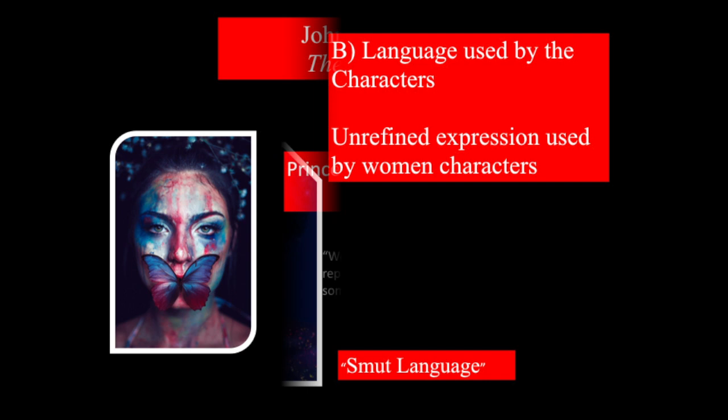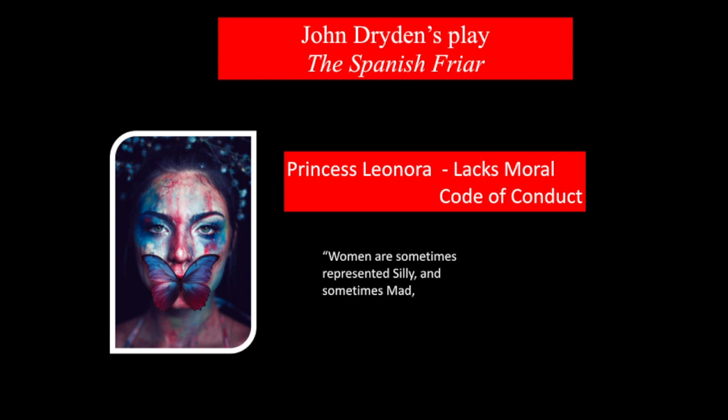Collier states one such work written by John Dryden — a poet laureate during the initial half of the Restoration period — called 'The Spanish Friar.' In this particular work, the main female protagonist, Princess Leonara, lacks a moral code of conduct. She is not able to keep her virtue intact, gets involved in wrong practices, licentious acts, and affairs. According to Collier, this is unbelievable because a princess is considered to be of very high stature, and a woman of high stature behaving in such a defiled manner is very unacceptable. He feels this sets entirely the wrong example in front of people.